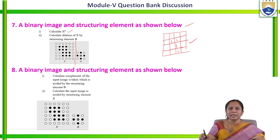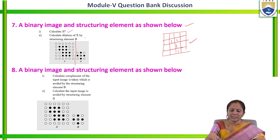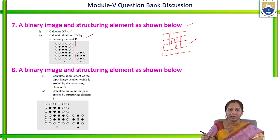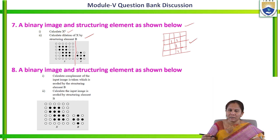Here we are asked to calculate Xc, which is the complement of image X, and next to calculate the dilation of X with the structuring element B. In order to solve that, we should know the rules of dilation, apply those rules, and then form the output image.